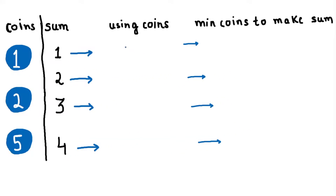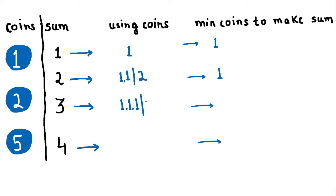Let's break the problem down to understand it more clearly. We start with sum 1 — there is only one option, we can use only one coin, so the minimum coins to make that sum is 1. For sum 2, we can use coin 1 twice or use coin 2 once, so the minimum coins is 1. For sum 3, we can use coin 1 three times, or we can use coin 1 and coin 2, so the minimum coins to make that sum is 2.